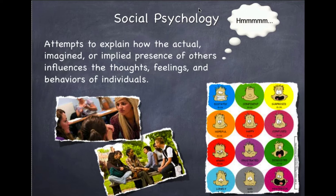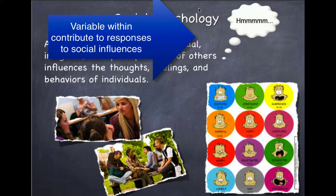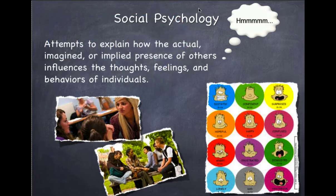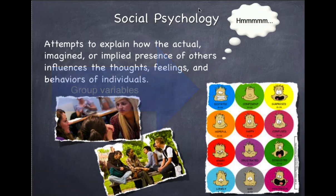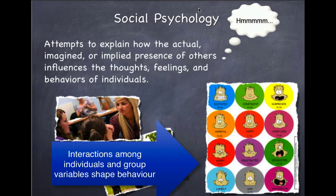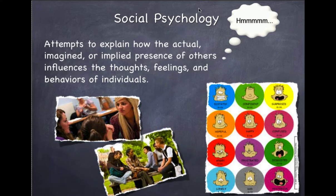Social psychologists are interested in how variables within individuals contribute to their responses to social influence, and that we don't all respond to social influences the same. Group variables — that is, how people you don't know and those you do associate with can influence your behavior. And thirdly, interactions among individuals and group variables shape our behavior. So let's look at some of the elements about what social psychology is.